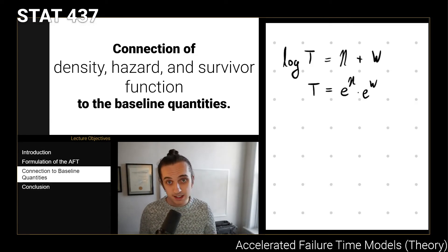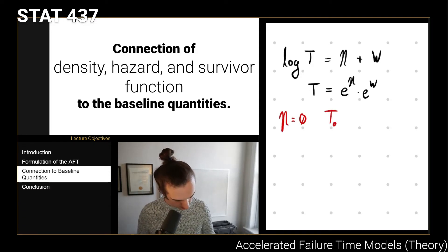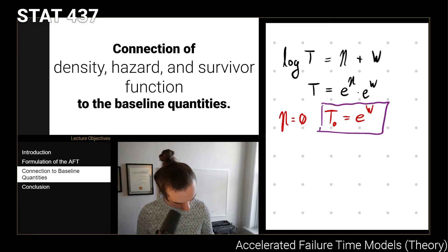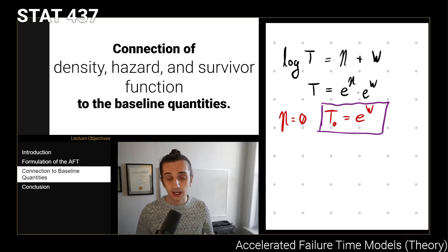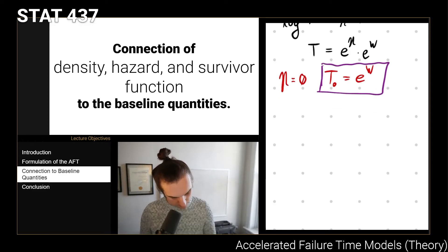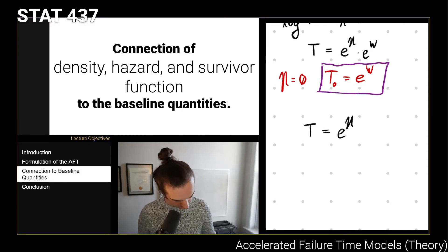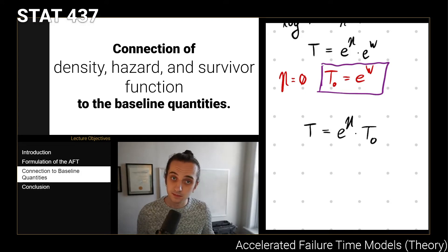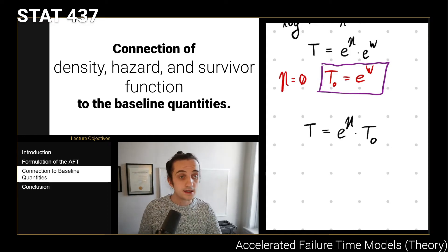If we think about an individual who has eta equal to zero, then t0 = e^w defines a sort of baseline time — some normal time. We're going to think about deviations from this baseline. So then t equals e^eta times t0, and we start to think about what happens when e^eta takes on different values.